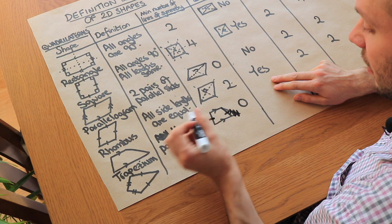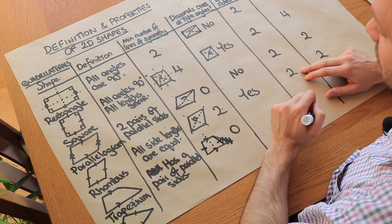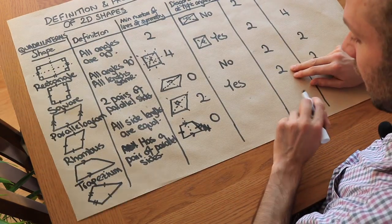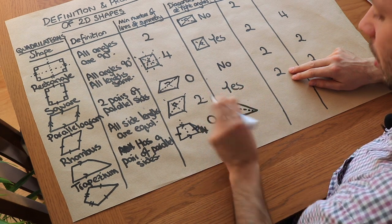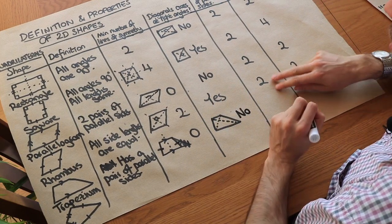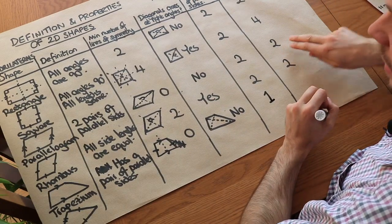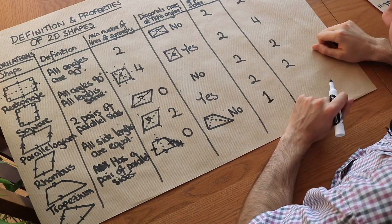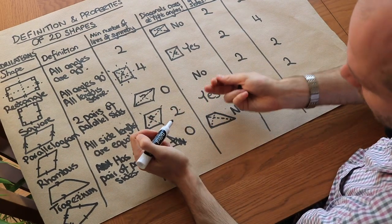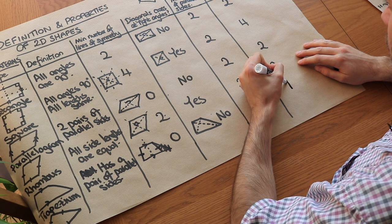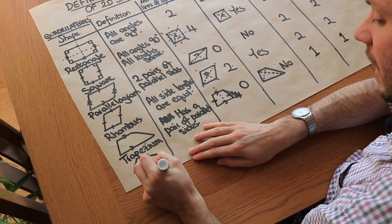If a trapezium has its two non-parallel sides equal in length, then it does have a line of symmetry. But in general it may not, so the minimum is zero. Drawing a general trapezium and connecting opposite vertices, the angle between the diagonals is more than 90 degrees, confirming they don't cross at right angles. Rotating a trapezium upside down does not give the same shape, so its rotational symmetry is of order one.